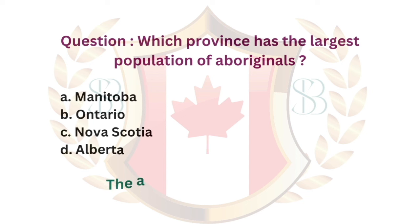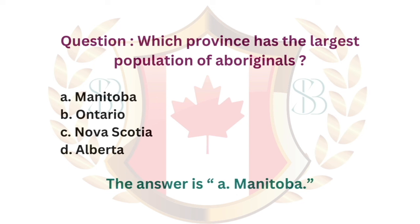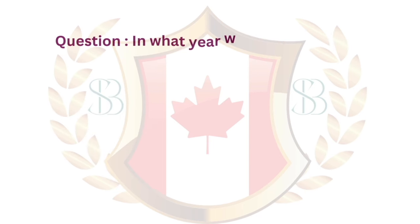Question. Which province has the largest population of aboriginals? a. Manitoba. b. Ontario. c. Nova Scotia. d. Alberta. The answer is a. Manitoba.